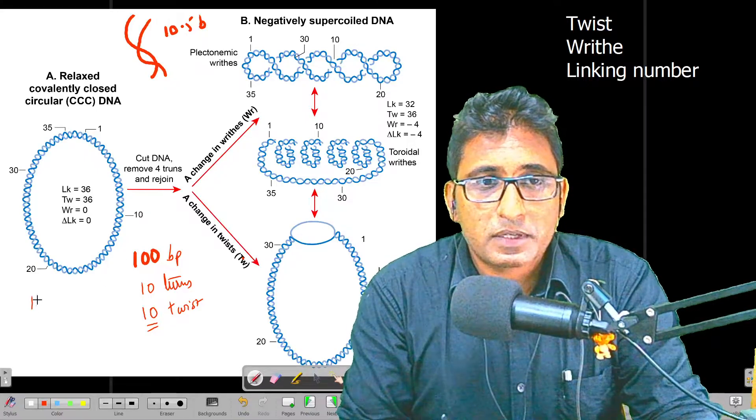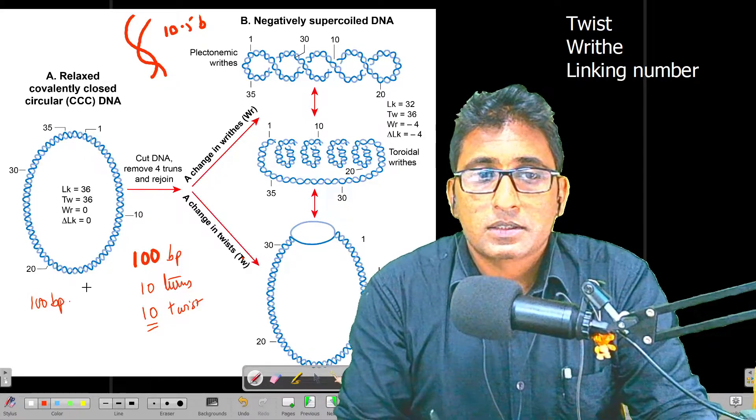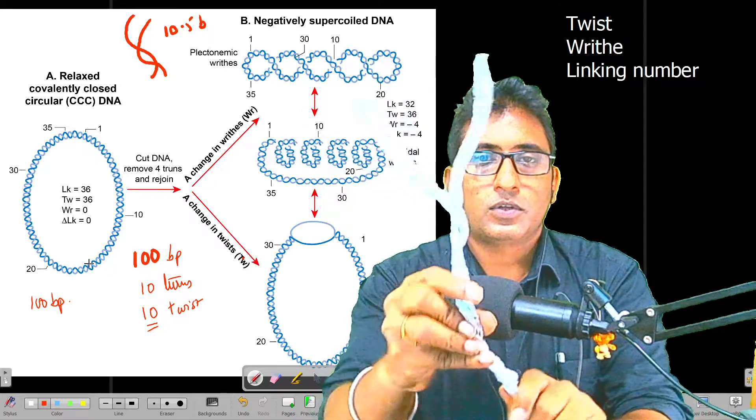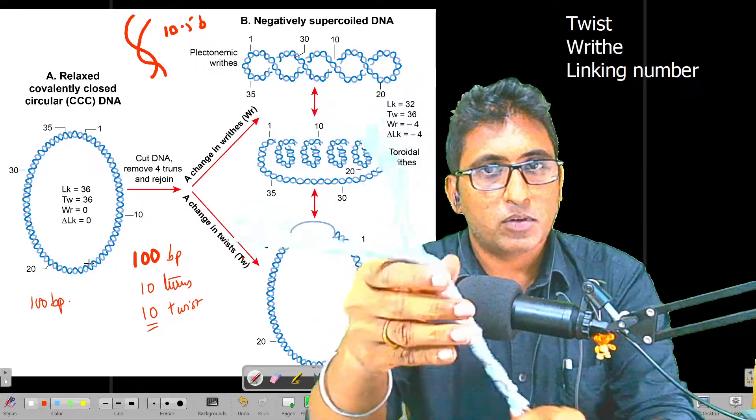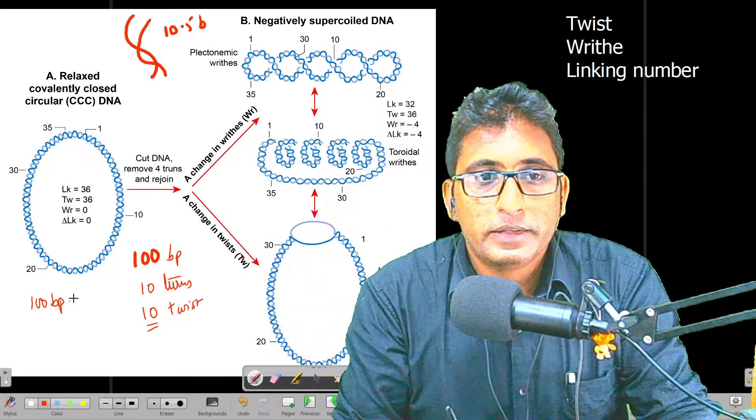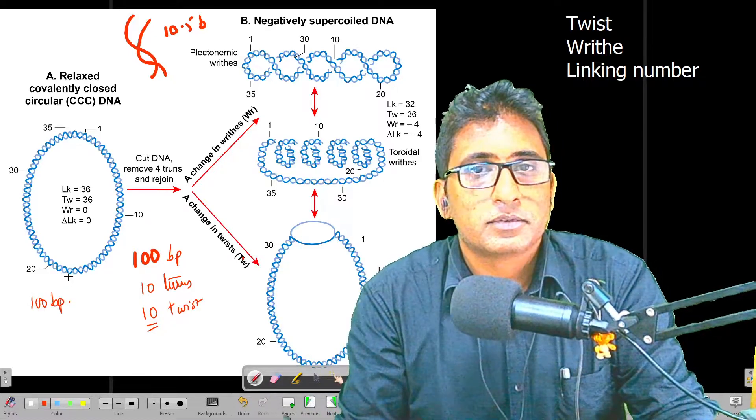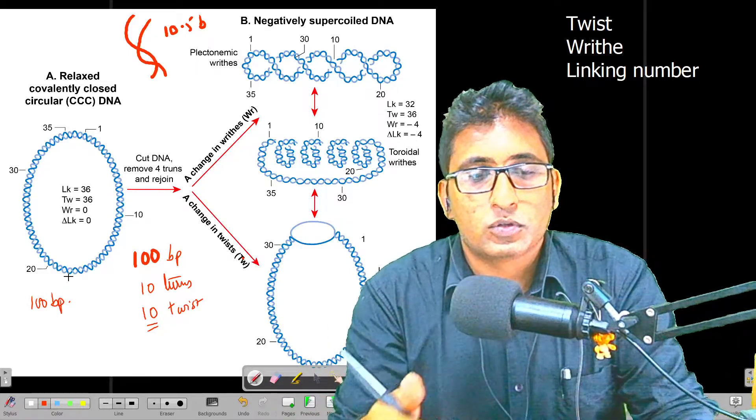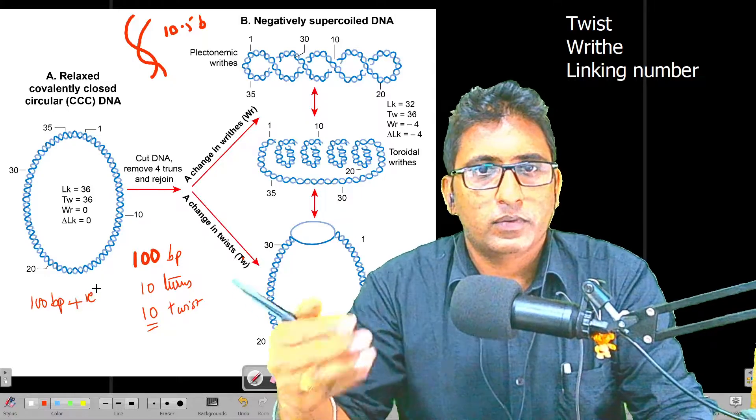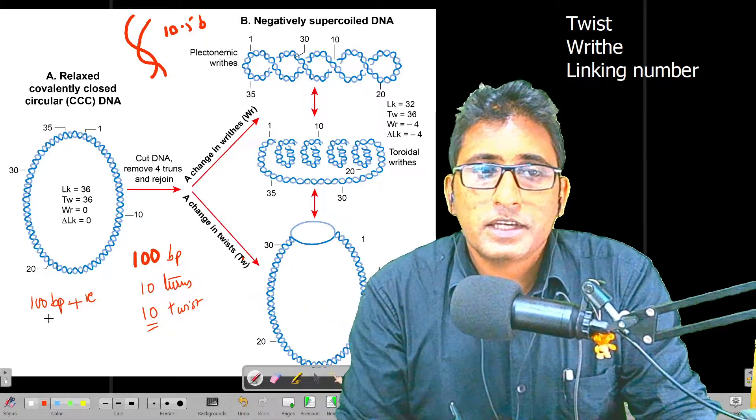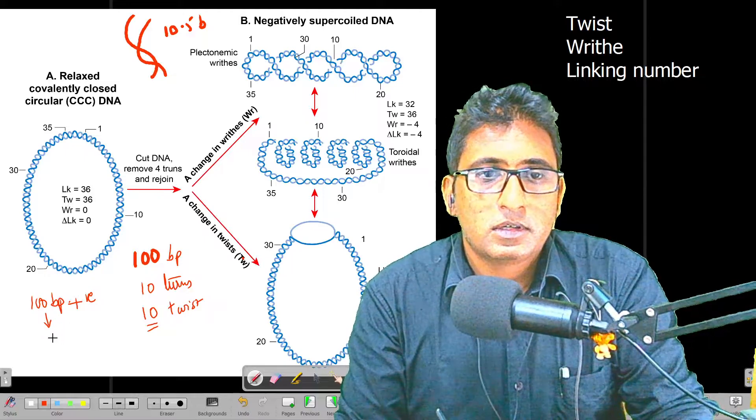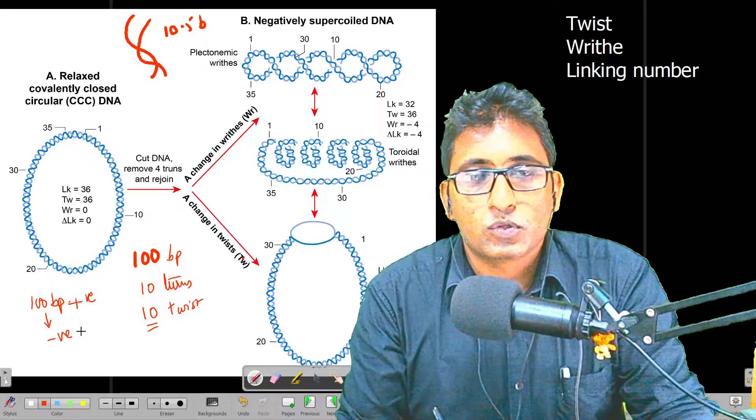That is the very normal or stable form of the supercoiling that is present. If a hundred base pair DNA has more number of turns, say if we try to induce more twists within the same amount of DNA, then it has more number of twists compared to what it should be having, and then we would call it as positive supercoiling. If the same 100 base pairs DNA has less than 10 twists, then we can call it as negative supercoiling.